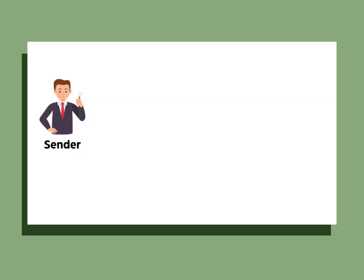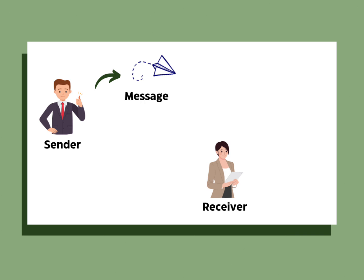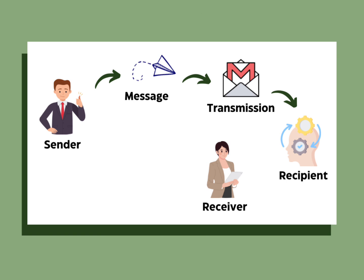For better understanding, let's have an example. Our sender is the manager who has some positive news for the receiver, who is his employee. The manager chose to tell her by encoding the message for a promotion since he wanted to tell her right away. The message was transmitted through email, and the receiver used one of her five senses — sight — since the message is in text form. The recipient will then interpret and decode the message to understand what is being said.